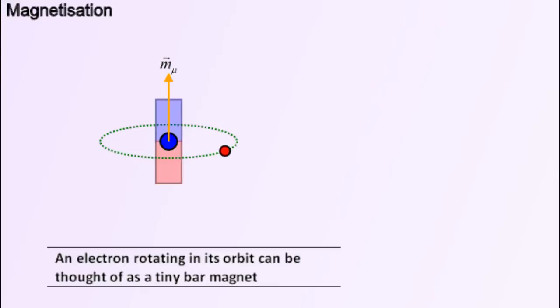Whenever we think of a current-carrying coil, it would be equivalent to a magnet with the same magnetic moment. So, in this case, the magnetic moment is upwards, since the electron rotates clockwise when viewed from the top. So, you can think of this electron as a tiny magnet with its north pole upwards and the south pole downwards.